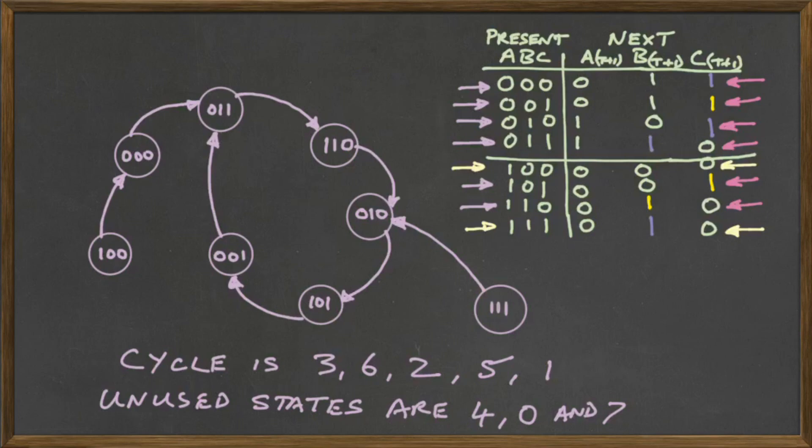Now, it's important to be able to get back to the cycle from the unused states so that if we accidentally end up in an unused state, and this can happen, our device is considered to be self-correcting. The device is self-correcting if we are able to get back to our cycle. And clearly, in this diagram, we are able to get to our cycle from any of the unused states. If we're in 7, the next state is 2. If we're in 4, we go to 0 first, and then we go from 0 into the cycle at 3.